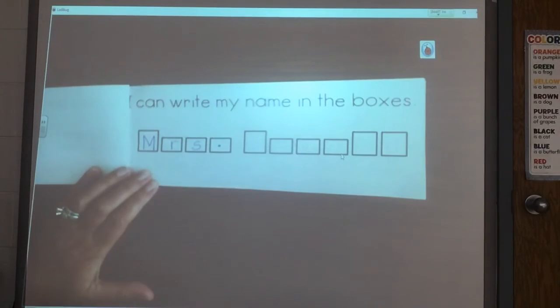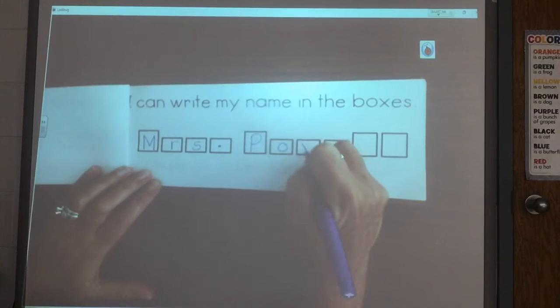And then there's a little dot after Mrs. because it is an abbreviation. Then I start on my last name. Uppercase P, which is tall. O is short. W is short. E is short. L, L. Lowercase L's are tall letters.